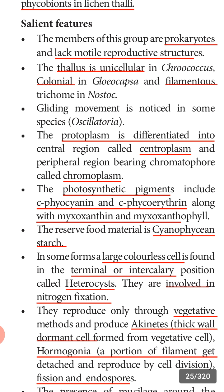In cyanobacteria, the protoplasm is divided into two regions: the central region is colorless and is called the centroplasm, where DNA is present; the peripheral region near the cell membrane is called chromoplasm because it contains chromatophores — 'chroma' means color — so colored pigments are present in this region.